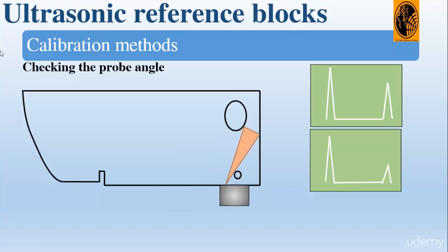The procedure can be repeated for 70 degrees, but reflecting energy from the plastic insert to produce a reliable signal is difficult. Therefore, we suggest using the 1.5 millimeter hole as a target instead.